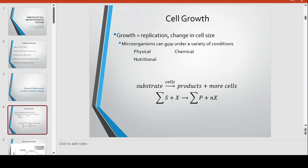Chemical environmental conditions include whether there are unwanted byproducts, pH, oxygen content, and whether toxic substances are present or not. Last but not the least is the nutritional condition — how many nutrients or sources of substrates are available, and do the cells have enough for living and growth?